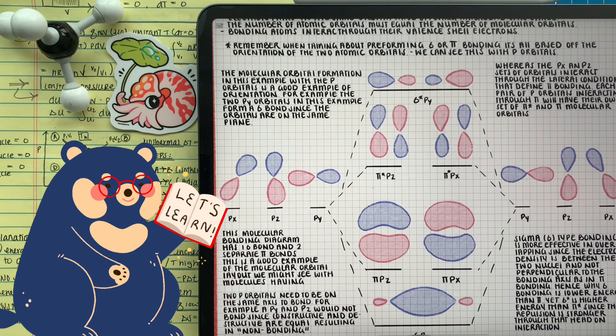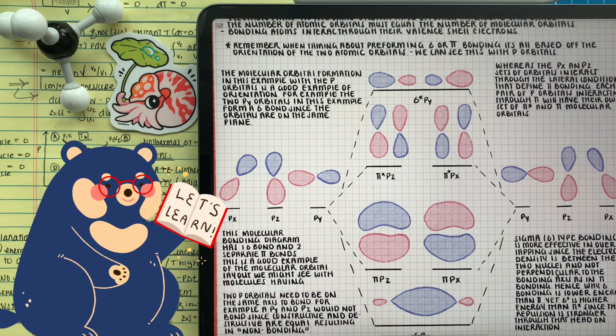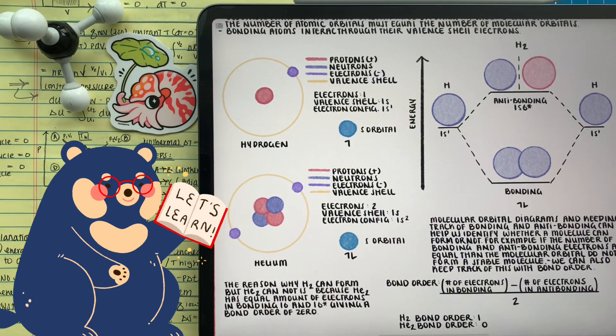Just as we saw with atomic orbitals and electron configuration, electrons elect to fill the lowest orbitals first. It's the same message for molecular orbitals.